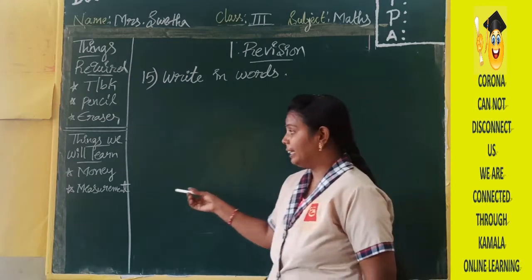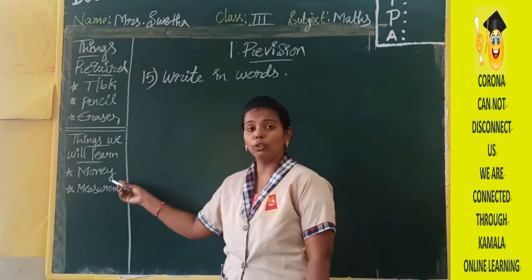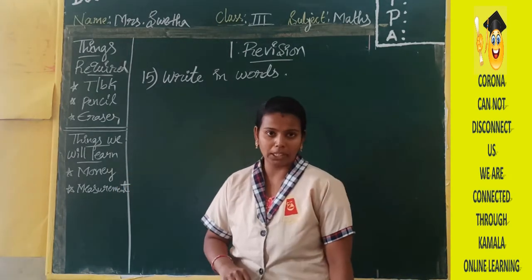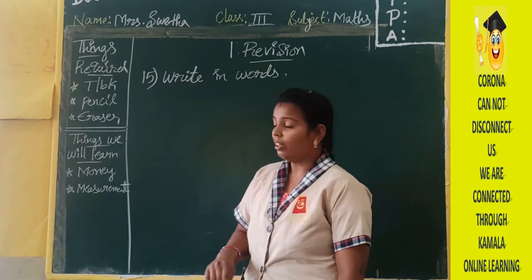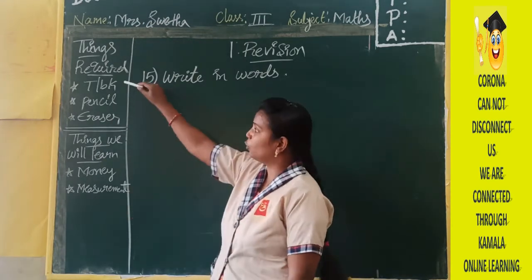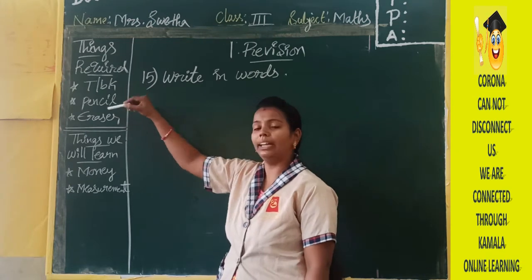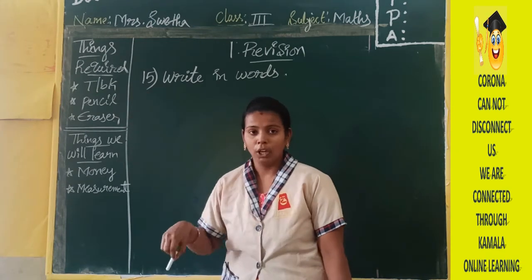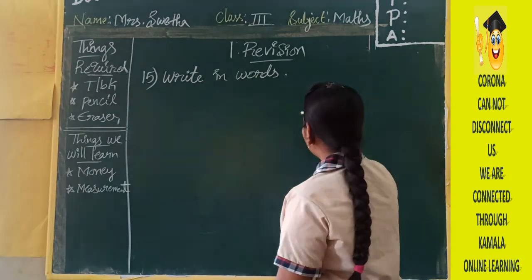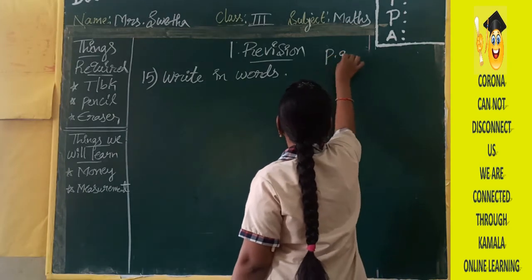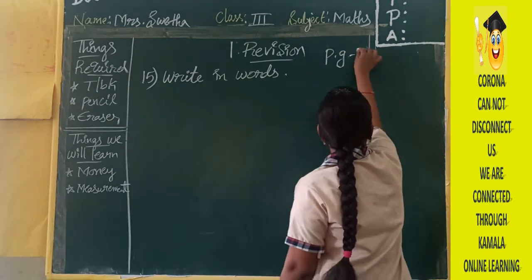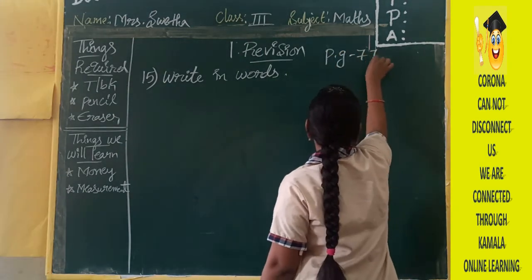Today, in the same way, we are going to deal with money and the measurement topics. For doing this money and measurement topics, you require your term book, pencil and eraser. You have this money and measurement topic on page number 77.